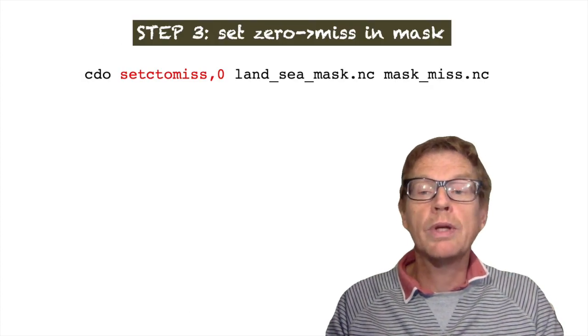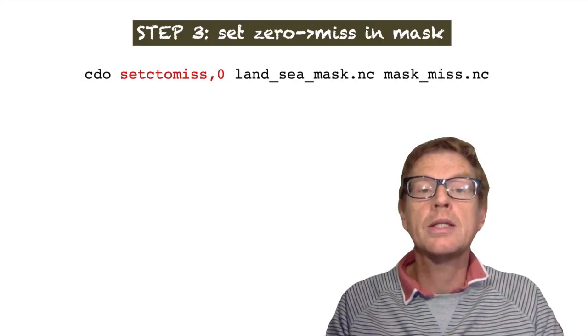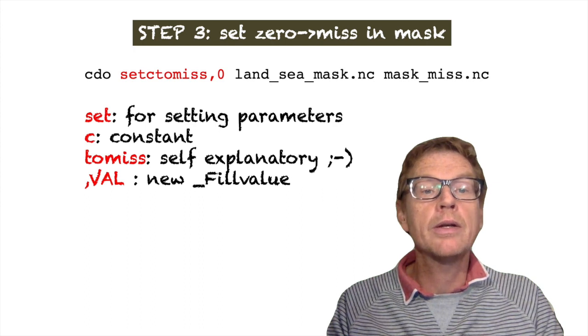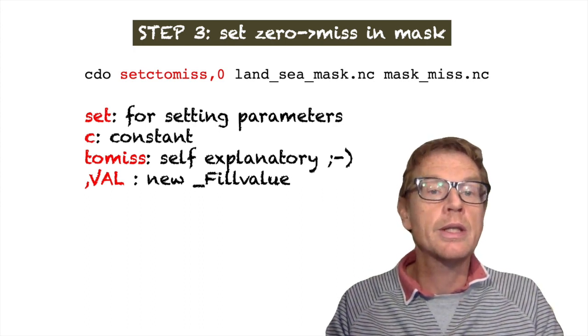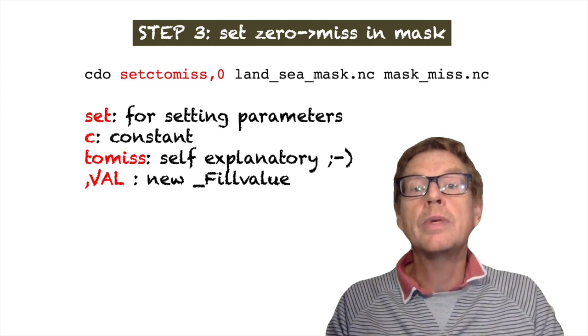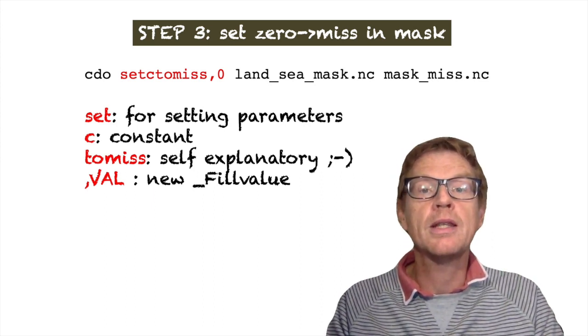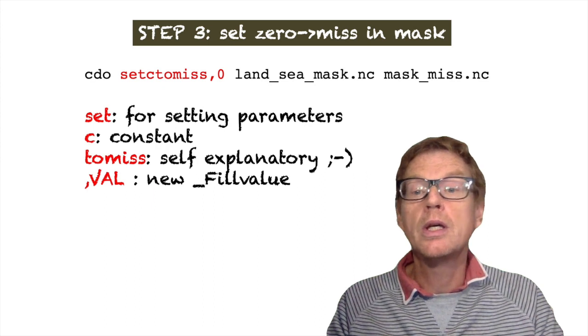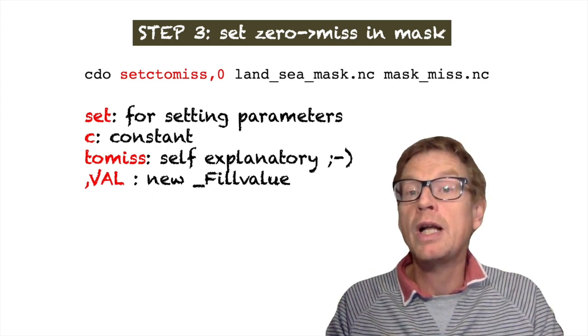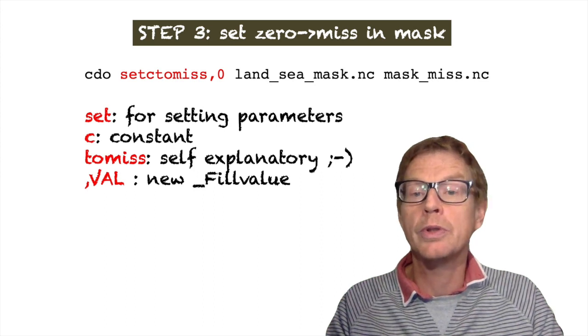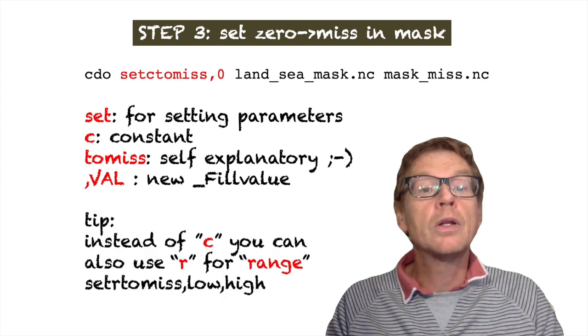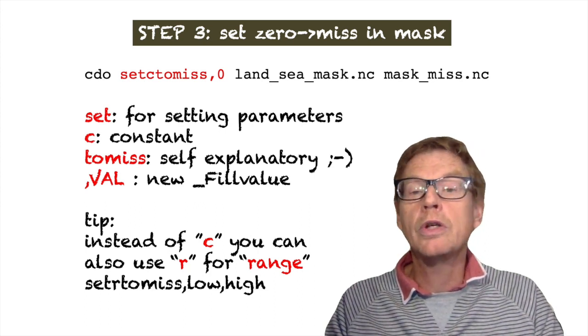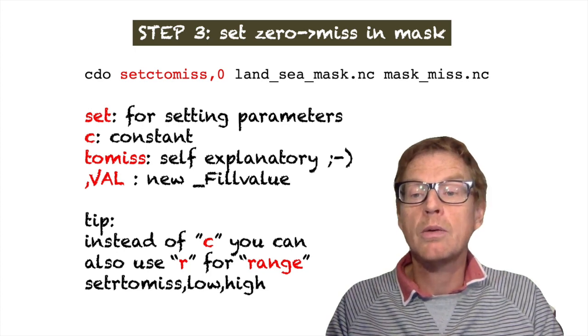Now, how do we actually do this? Well, there's a command in CDO, which is setCtomiss. And again, this should be familiar. Now we can break this down. Set is for setting parameters. C is the abbreviation we've seen already for constant. To miss is self-explanatory. We're just setting the missing value. And then we need to give an argument. And in this case, we want to set the C points, which are zero in the mask to missing. And they will be set to the value specified in the fill value attribute of the field. We will see later that you can also use instead of C, you can use R for range, which gives us another option to actually mask out data, which we will see later in the video.